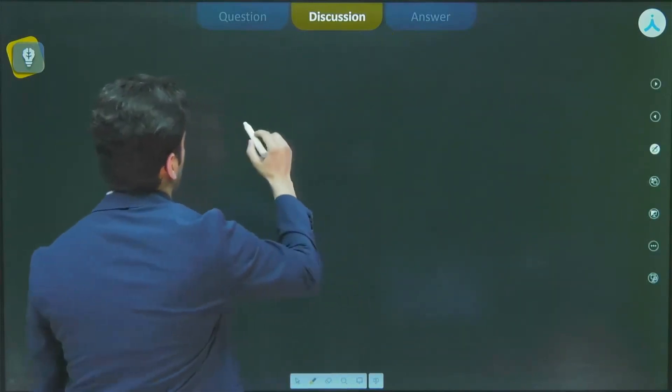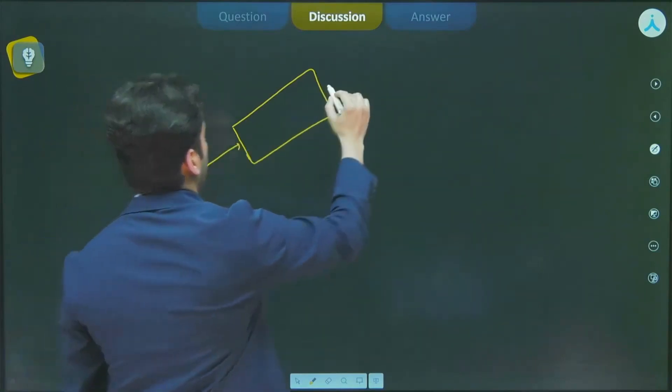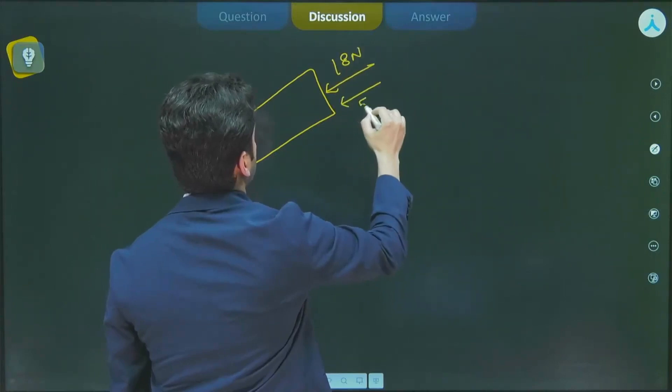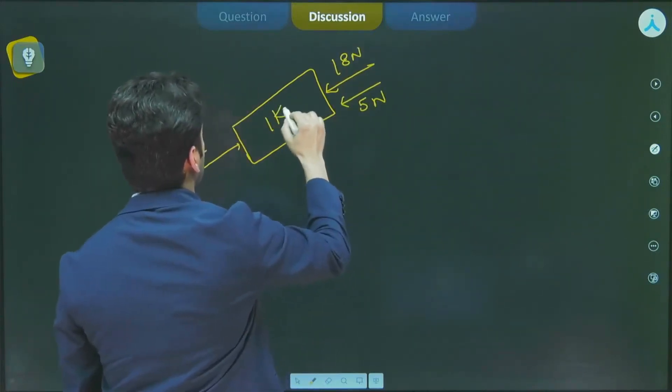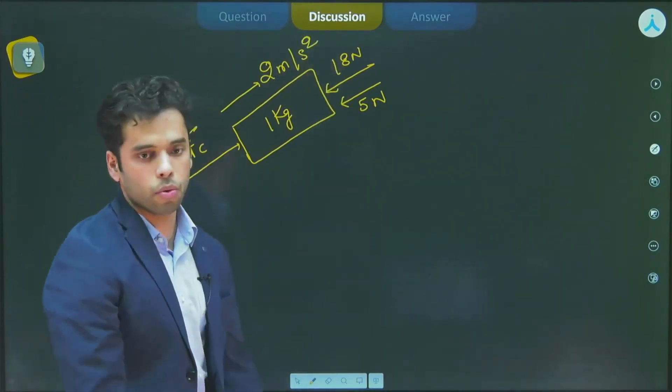So I will draw it again. This is your block. The contact force is like this, 18 N is like this, 5 N due to the weight is like this. 1 kg is the mass, and it needs to have acceleration of 2 meter per second square in this direction.